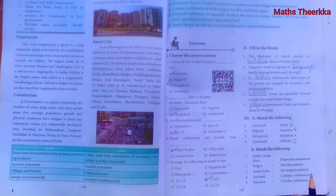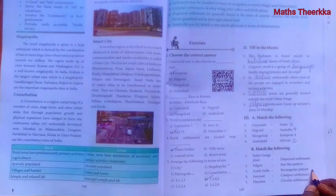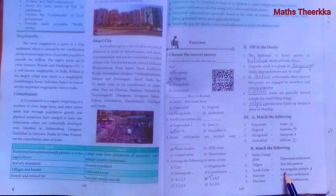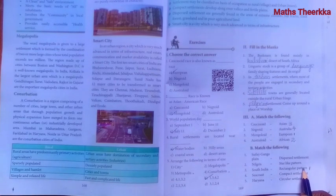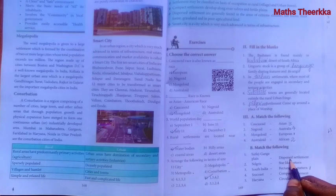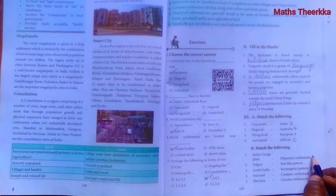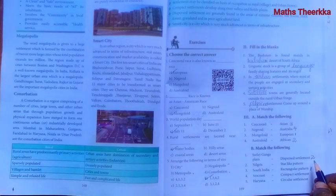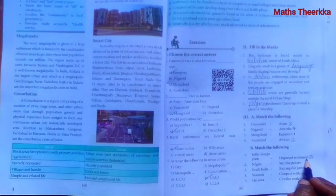Match the following settlements. Satluj-Ganga Plain — rectangular pattern. Nile Greece (Nile region) — dispersed settlement.